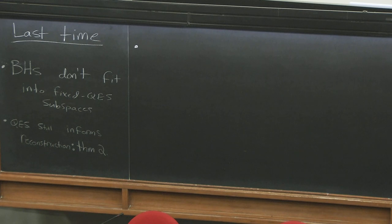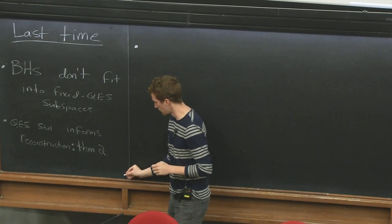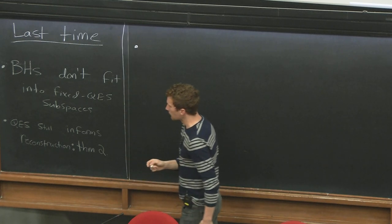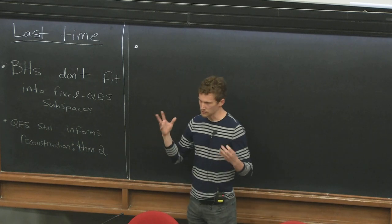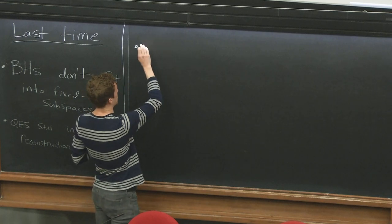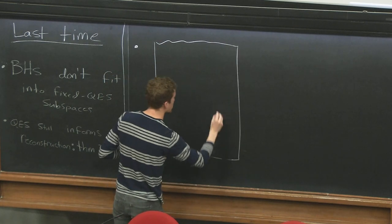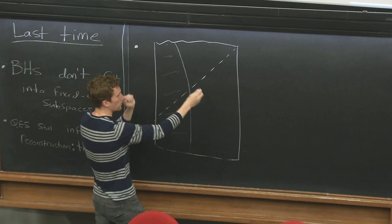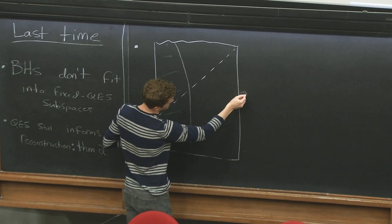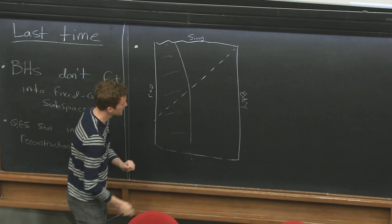In principle, the program now would be to take this theorem and compute the quantum extremal surface of various regions like the CFT when the black hole is in various states. Even though that's hard, there's something qualitative and very important we have learned. Let me emphasize something we learned from theorem two: we were talking about the evaporating black hole in ADS, which we might draw a Penrose diagram for.